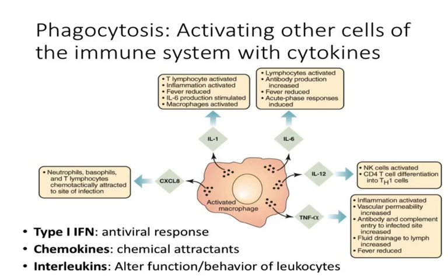Chemokines are the chemical attractors — that's how macrophages recruit neutrophils from the initial site of inflammation. Interleukins alter the behavior of cells or activate them to respond to an immune response. In the case of macrophages, exposure to cytokines ramps up phagocytosis, increasing not only the rate of phagocytosis but also the rate of breakdown of microorganisms in those phagolysosomes.